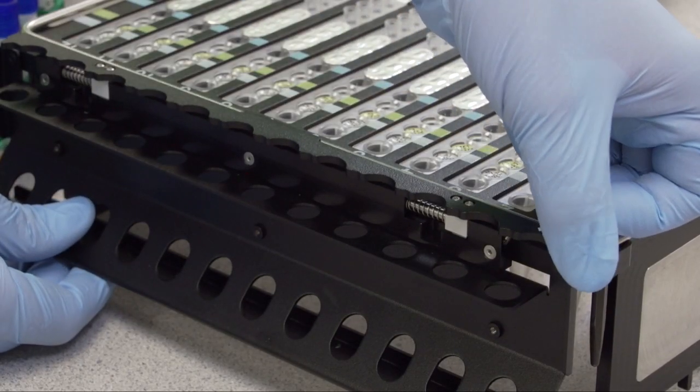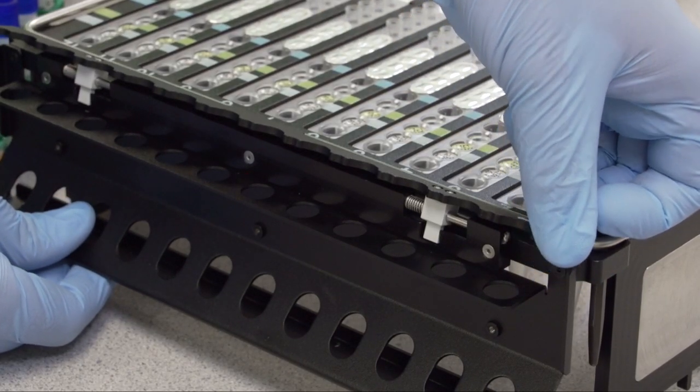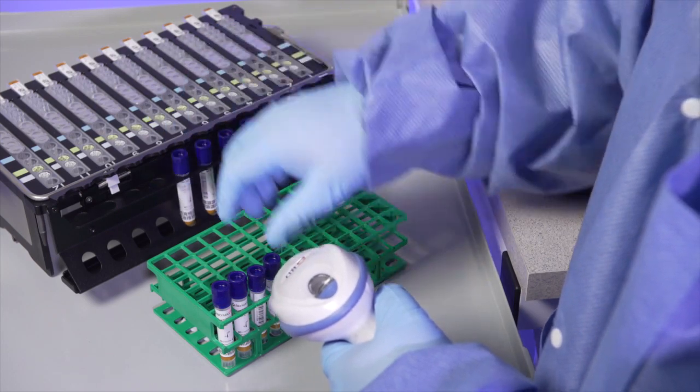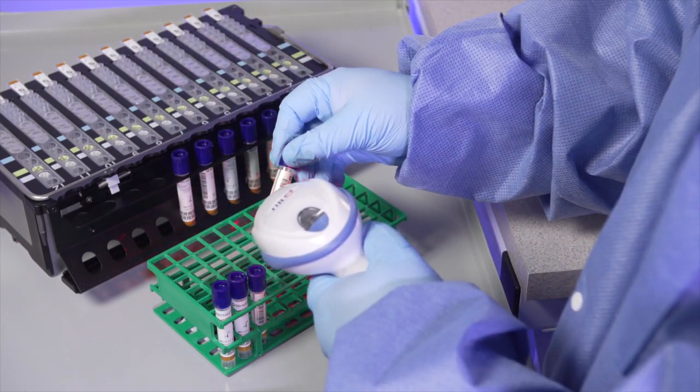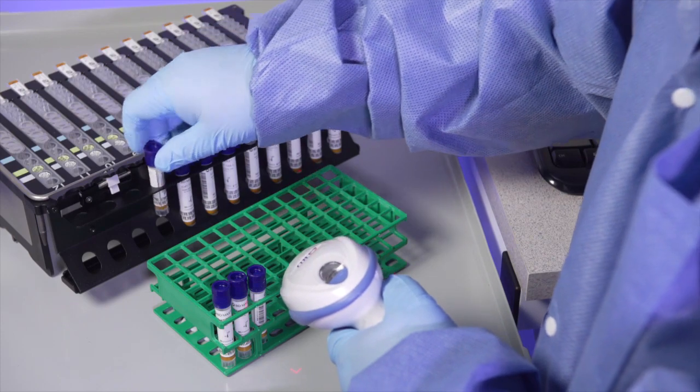Slide and rotate the latch mechanism open. Place the sample buffer tubes into the BDMAX System Rack corresponding to the unitized reagent strips previously assembled.